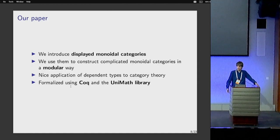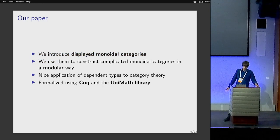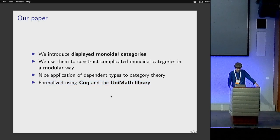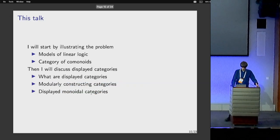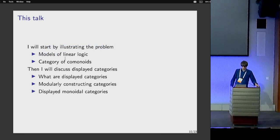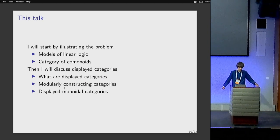What I will tell you during this talk is the following. Our paper first introduces the notion of displayed monoidal category, then shows how we can use them to construct complicated monoidal categories. This is a nice illustration of how we can use dependent types in the formalization of category theory. It is formalized using Coq and the UniMath library. I'll first talk more about models of linear logic — specifically the LaFont model using comonoids — and then talk about displayed categories and displayed monoidal categories.